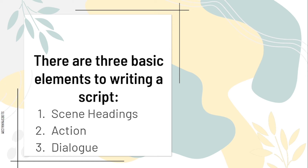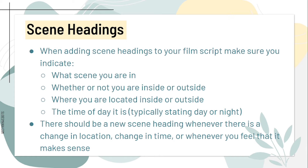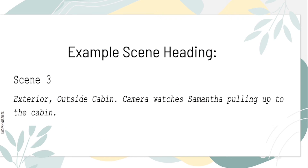There are three basic elements to writing a script: scene headings, action, and dialogue. For scene headings, when adding scene headings to your film script, make sure you indicate what scene you are in, whether you are inside or outside, where you are located, and the time of day — typically just day or night. There should be a new scene heading whenever there is a change in location, change in time, or whenever you feel it makes sense. This is an example of a scene heading.